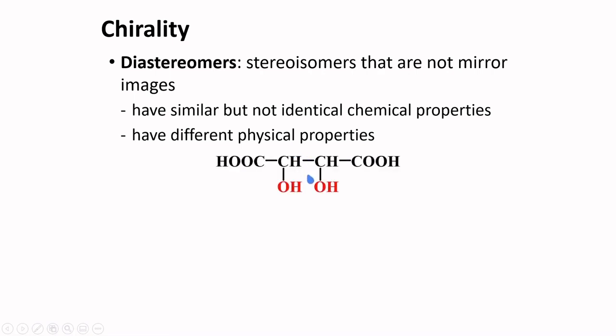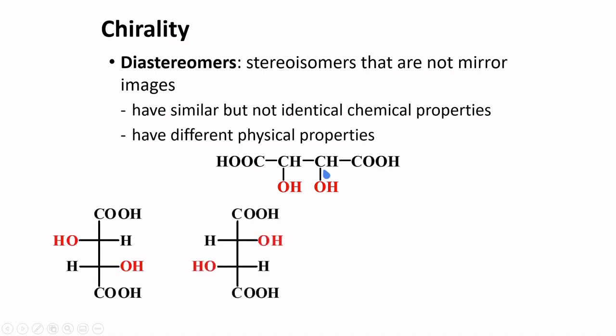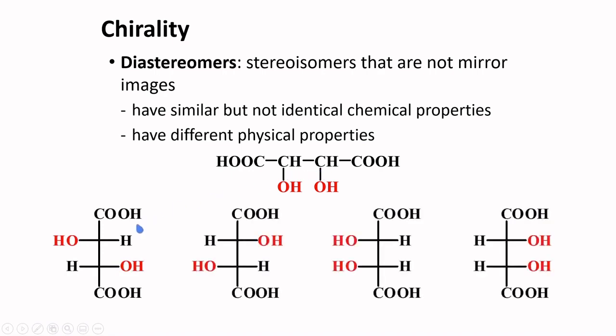Let's try this compound, tartaric acid. Tartaric acid has two chirality centers. Four Fischer projections of tartaric acid are given here. Again, we can put a mirror plane in between these two structures. Hence, they are enantiomers.